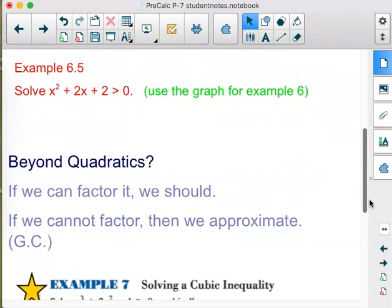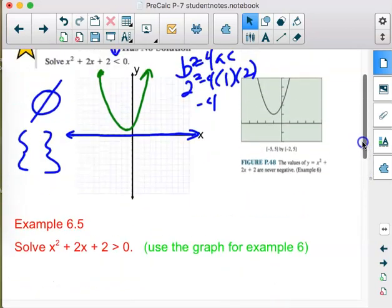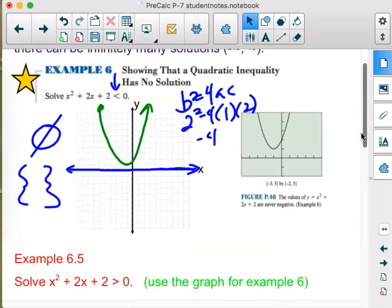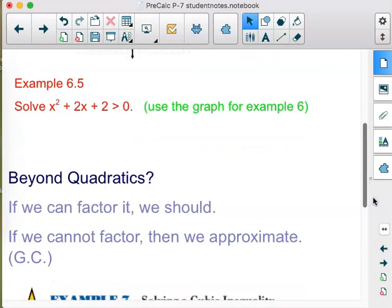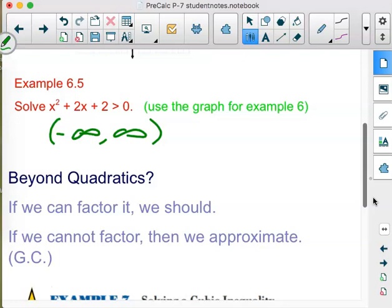So, it's just kind of a quick double check that you didn't punch it in wrong when you're looking at it. And then, example 6.5 says, let's use the same one. But this time, we're going to change it to greater than zero. When is it greater than zero? Well, it's above the x-axis all the time. The whole thing is. So that means this is going to be all real solutions, which in interval notation would be negative infinity to infinity.